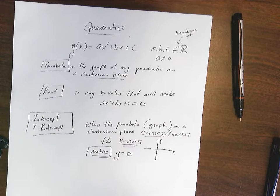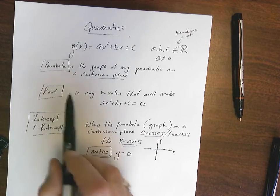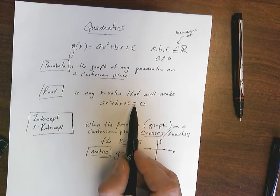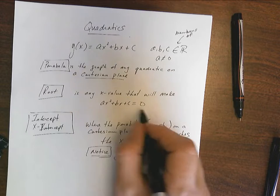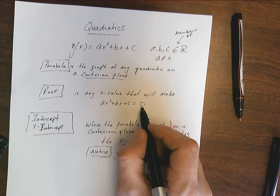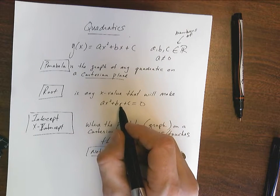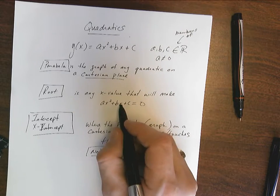So intercepts and roots are related. The root is any value of x that's going to satisfy this equals zero. Any value, and those values could sometimes be complex values. It's sometimes possible that I'm going to get a complex value of x that's going to make this whole thing equal to zero.